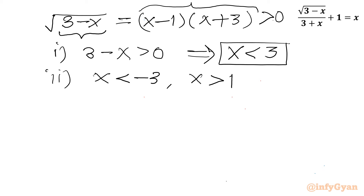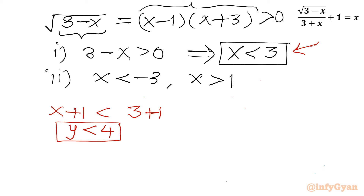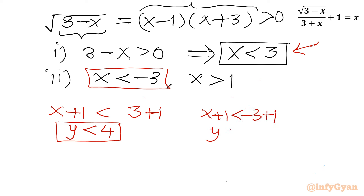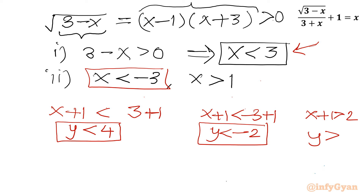Now converting these conditions to y, where y equals x plus 1: from x less than 3, adding 1 gives y less than 4. From x less than minus 3, adding 1 gives x plus 1 less than minus 2, so y less than minus 2. From x greater than 1, adding 1 gives x plus 1 greater than 2, so y greater than 2. Therefore y must be less than 4 and must not lie in the interval [minus 2, 2].